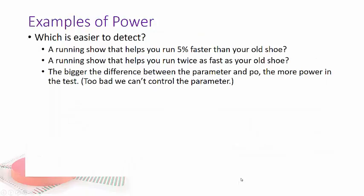Okay. So let's take a look at some examples for power. Again power is when it's easier to detect when the null hypothesis is false. Alright. So normally our null for a new running shoe is it behave exactly the same way as your old running shoe. Well if the running shoe helps you run 5% faster than your old shoe you might be able to detect the improvement in performance. But if by some magical power it showed that you could run twice as fast as your old shoe that's a lot easier to see. So the bigger the difference between the parameter and p0 the more power in the test. Too bad we can't control the parameter.